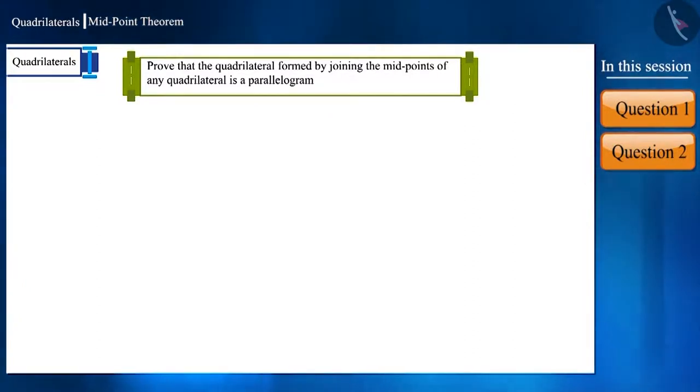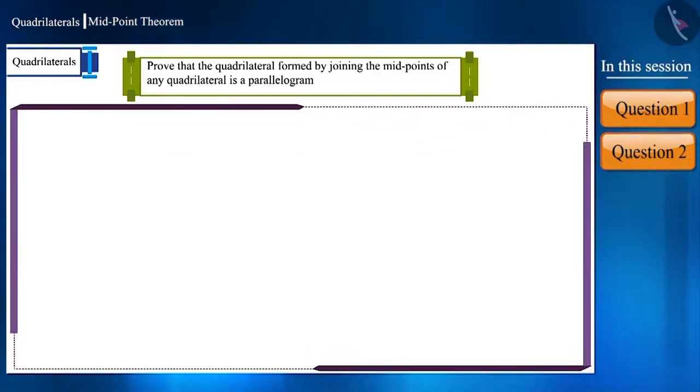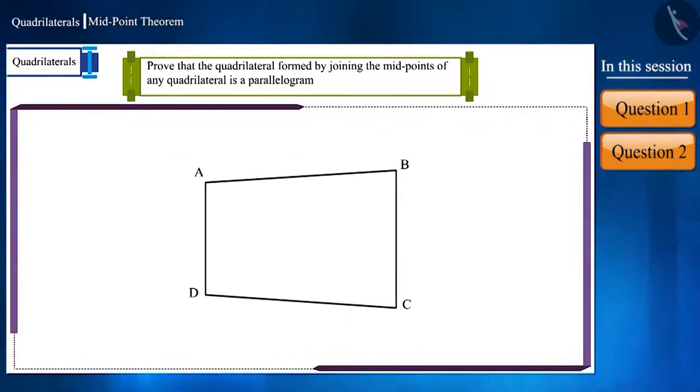Friends, let's first draw a figure with the help of the question. ABCD is a quadrilateral. Points PQR and S are the midpoints of sides AB, BC, CD and DA respectively.